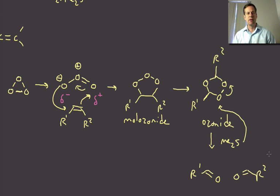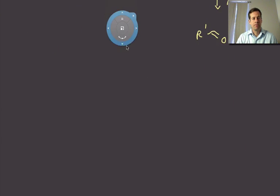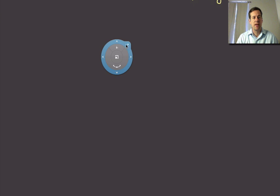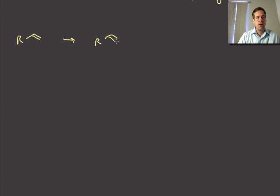That's actually really useful as a synthetic tool because you can get to aldehydes or ketones depending on the alkene that you're going to use. If you have a terminal alkene, that's obviously going to go to an aldehyde, and then the other product is going to be formaldehyde.